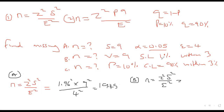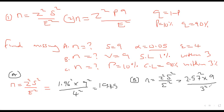Part C uses proportions, so we use the formula n = z²pq / e². At 90% confidence, Z = 1.64. P = 10% = 0.1, so Q = 0.9. The error is given as a percentage so we leave it as a decimal. The resulting sample size is approximately 268.96, giving n = 269.